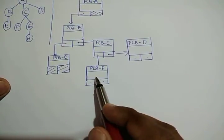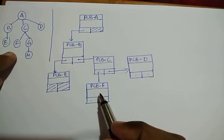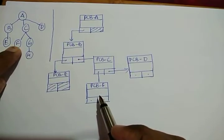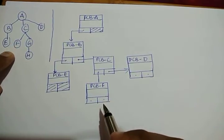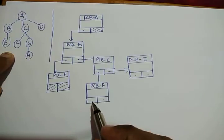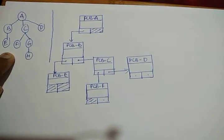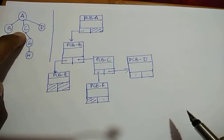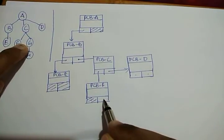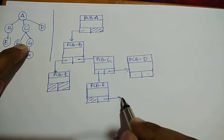Now come to F: does F have any child? No, so it will be null. Does F's parent C have a further child? Yes, G. So the second field of F's PCB will be linked to the PCB of G.